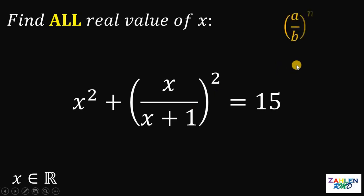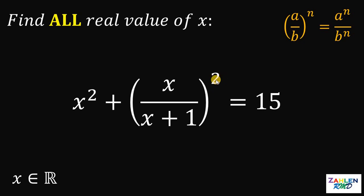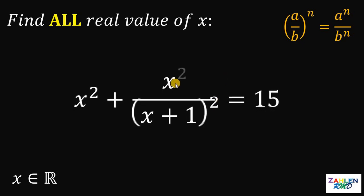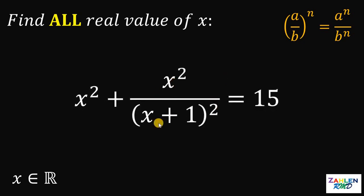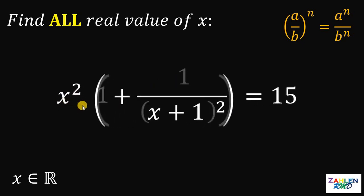Take note that if we have (a/b)^n, it is equivalent to a^n over b^n. Therefore, the expression (x/(x+1))² can be written as x² over (x+1)². Now notice that we have a common term of x², so we can factor out x².